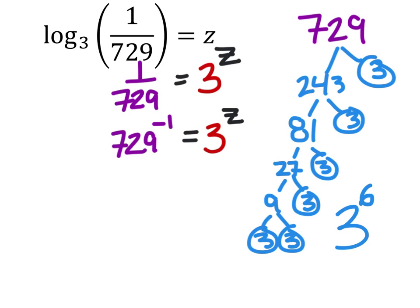Now again this isn't necessarily a prime factorization of 729 it's just we're looking for how many times 3 is being multiplied by itself to get that 729. So 729 is 3 to the power of 6 but that was all to the power of negative 1 right? And this equals 3^z.